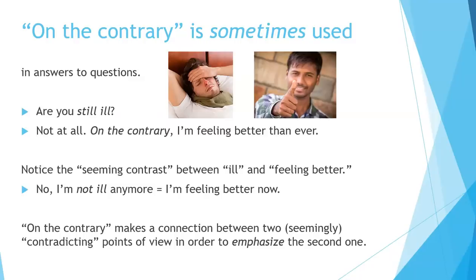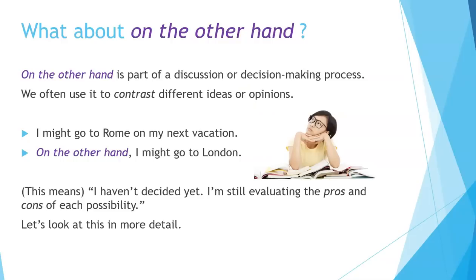'On the contrary' makes a connection between two seemingly contradicting points of view in order to emphasize the second one. What about 'on the other hand'? 'On the other hand' is part of a discussion or decision-making process — we often use it to contrast different ideas or opinions. For example: 'I might go to Rome on my next vacation. On the other hand, I might go to London.' This means I haven't decided yet — I'm still evaluating the pros and cons of each possibility.